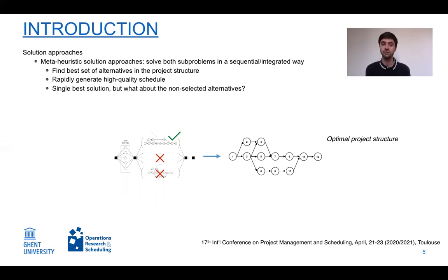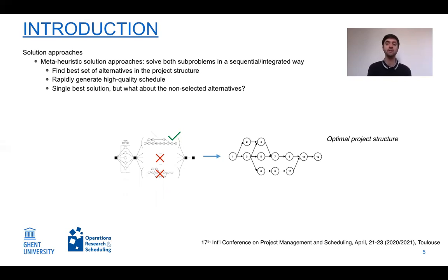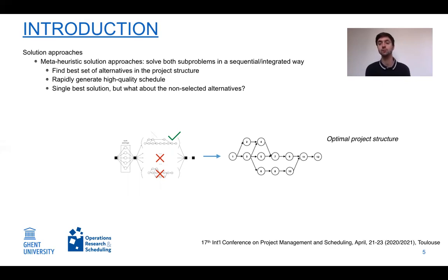Meta-heuristics are very interesting because they allow us to find the best sets of alternatives in a project structure rapidly, generating high quality schedules. However, the disadvantage is that in most research only the single best solution — with the single best set of alternatives — is reported. From a theoretical point of view this makes sense, as researchers are searching for the best solution they can find.